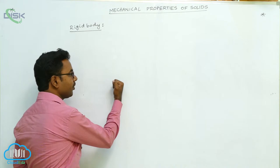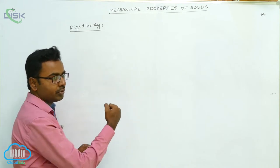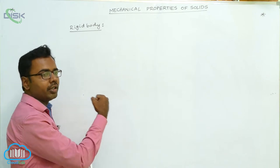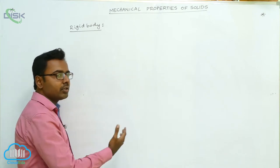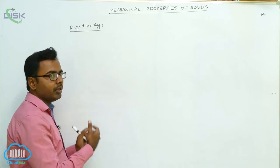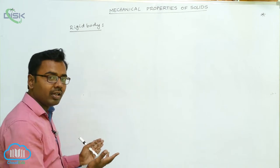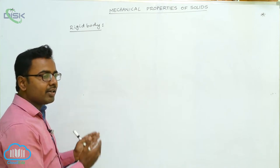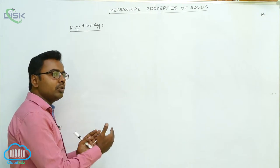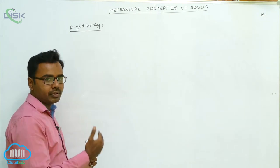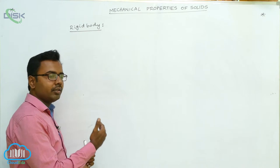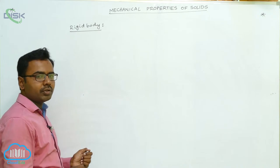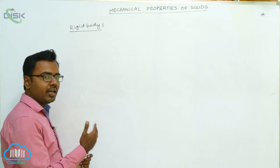For example, this blackboard is a rigid body up to a particular amount of force. When I apply force on it up to a certain value, the blackboard behaves as a rigid body. Beyond that force, the blackboard would break — it would no longer act as a rigid body. So in physics, we consider every body as a rigid body up to a certain amount of force.